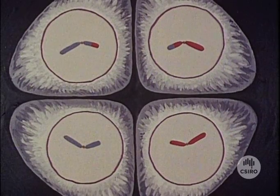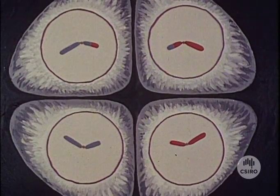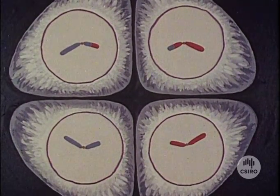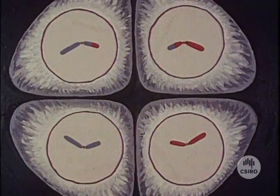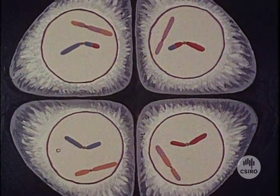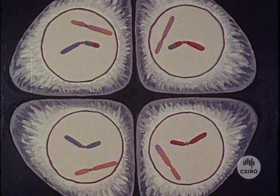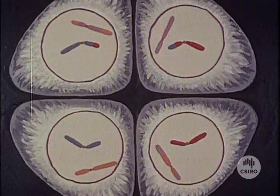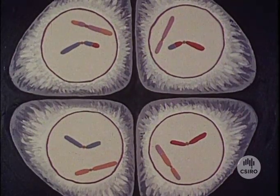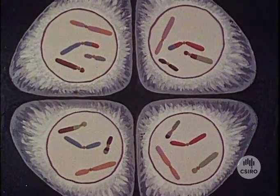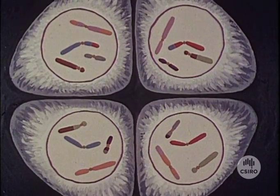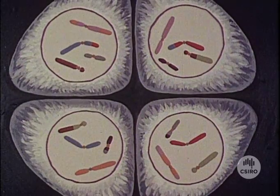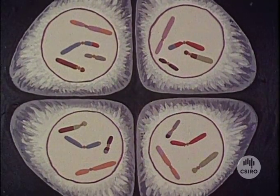Two of the resultant chromosomes contain segments of both parental chromosomes, while the other two remain unaltered — this is the result of a single crossover. Usually more than one crossover occurs, so that all the resultant chromosomes contain segments of both parent chromosomes. If we had considered two pairs, we would have seen exactly the same process in each pair, and similarly with all the pairs, resulting in an exchanging of chromatid segments and the halving of the adult chromosome number — the essential feature of meiosis.